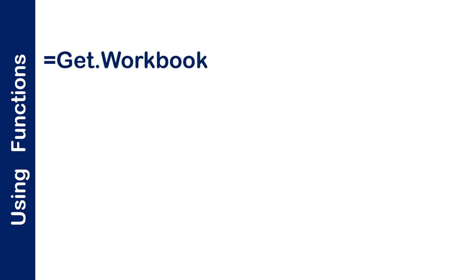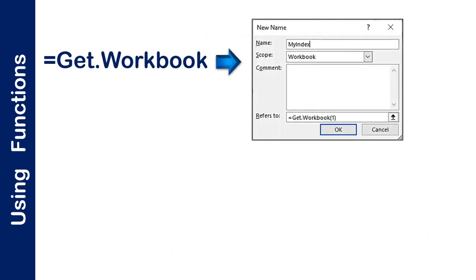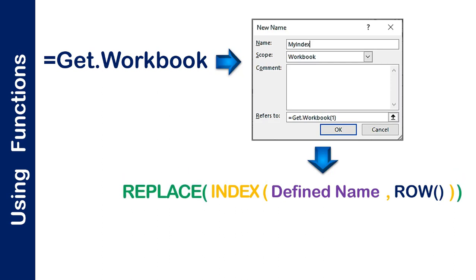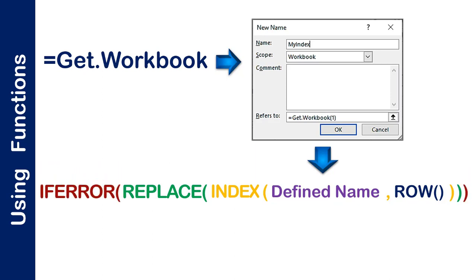I use the Get.Workbook macro function inside a defined name. To bring the list of sheet names into my summary sheet, I use the defined name inside an INDEX function, which also requires a ROW function. To get rid of the file name, I put the INDEX function inside the REPLACE function. And to avoid errors when we copy the INDEX function beyond the total number of sheets, I put the bunch of functions inside an IFERROR function.